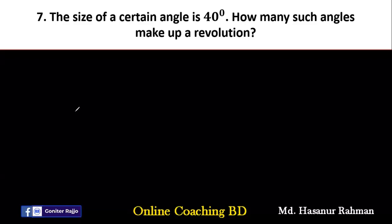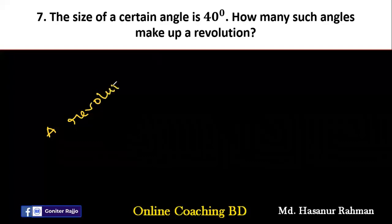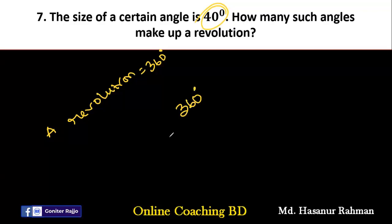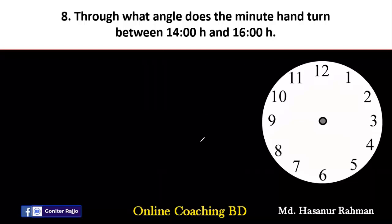Number seven says: the size of a certain angle is 40 degrees — how many such angles make up a revolution? A full revolution is 360 degrees. So we divide 360 by 40, which gives 9. You need nine 40-degree angles to make a full revolution.